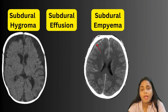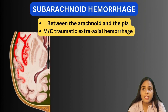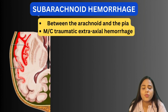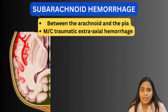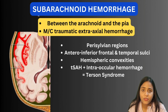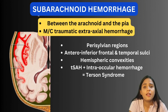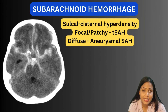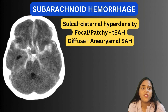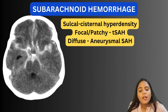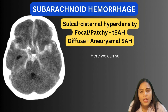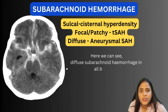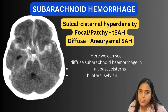Subarachnoid hemorrhage is accumulation of blood products below the arachnoid — between the arachnoid and the pia mater. This is an actual extra-axial space because it contains CSF. SAH is the most common type of traumatic extra-axial hemorrhage. It extends into the sulci; more common locations are the perisylvian regions, anteroinferior temporal and frontal sulci, and hemispheric convexities. A traumatic SAH occurring with traumatic intraocular hemorrhage is termed Terson syndrome. On imaging, sulcal and cisternal hyperdensities are seen. Focal or patchy distribution suggests traumatic SAH; diffuse distribution suggests aneurysmal SAH. The image here shows diffuse SAH involving all basal cisterns, bilateral sylvian fissures, and the interhemispheric fissure.